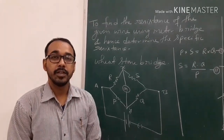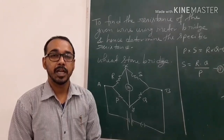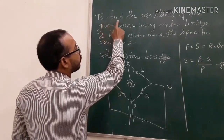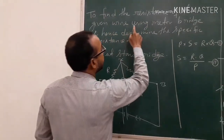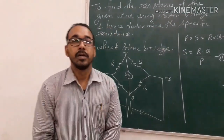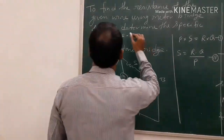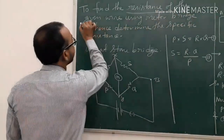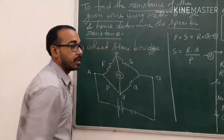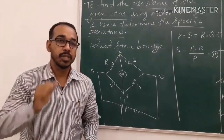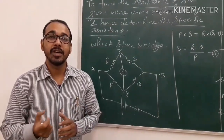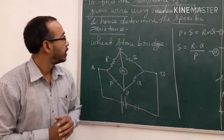In this video I am going to discuss our first experiment. The aim of the experiment is to find the resistance of the given wire using a meter bridge, and hence determine the specific resistance of the wire. So two things will be discussed: one is the resistance of the given wire which is unknown, and the other is its resistivity.